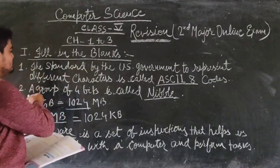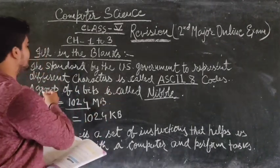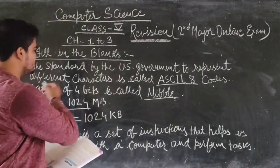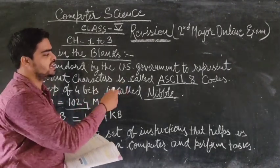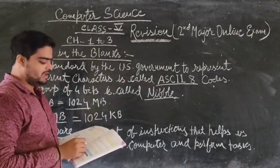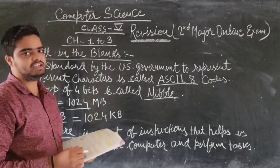Fill in the blanks. Question 1: Started by the human to represent different characters is called dashed code. The answer to this question is ASCII, and the full form is American Standard Code for Information Interchange.